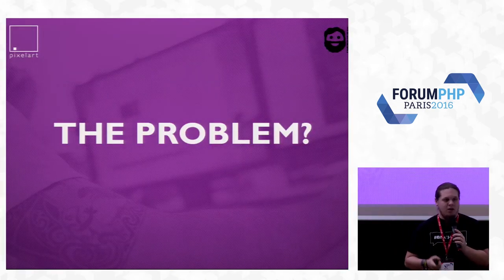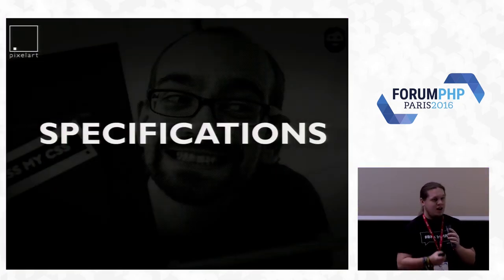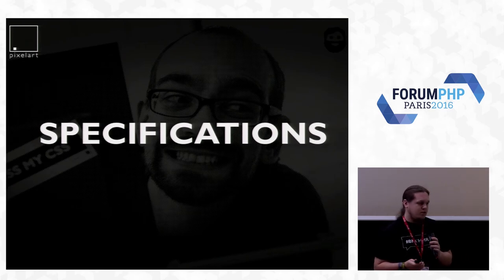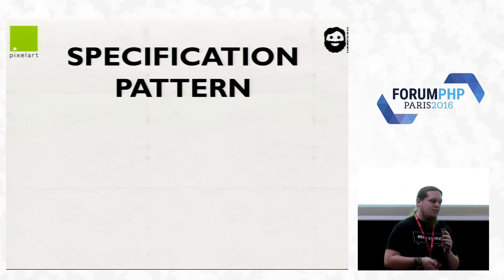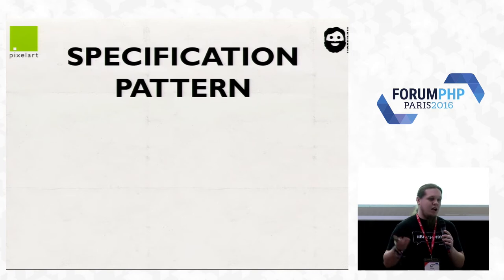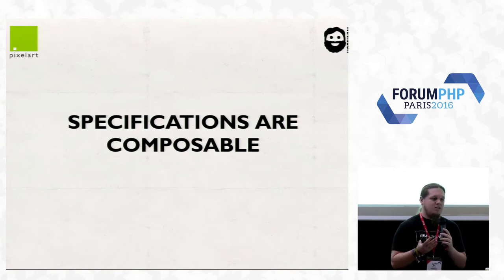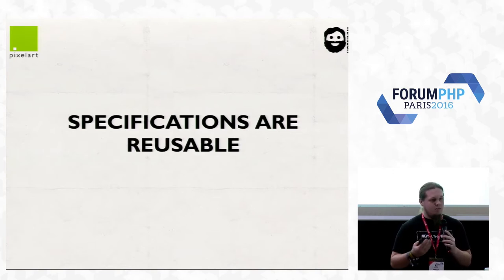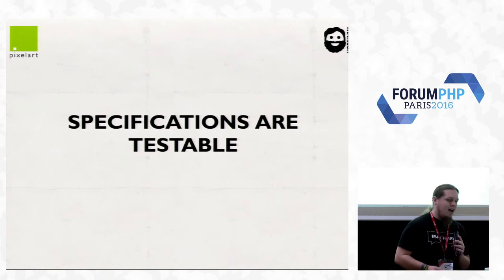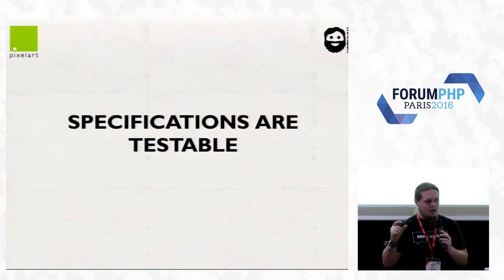With specifications, you can tackle this problem and tame your repositories with the specification pattern. The central idea of a specification is to separate the statement of how to match the candidate — our unicorn model — from the candidate object. Specifications are composable: you can combine them like a simple if. They are reusable — you don't need to rewrite your code. And they are testable — they are small units of test.